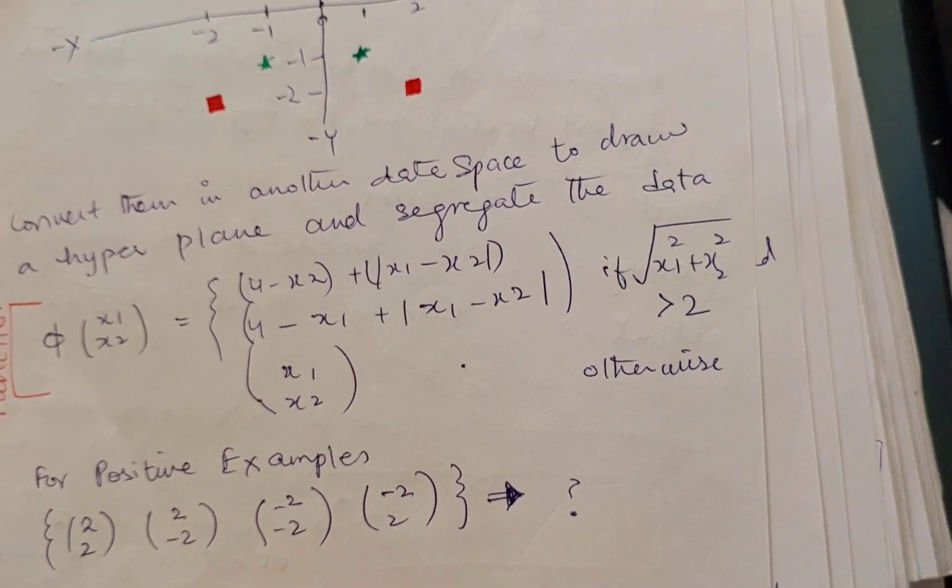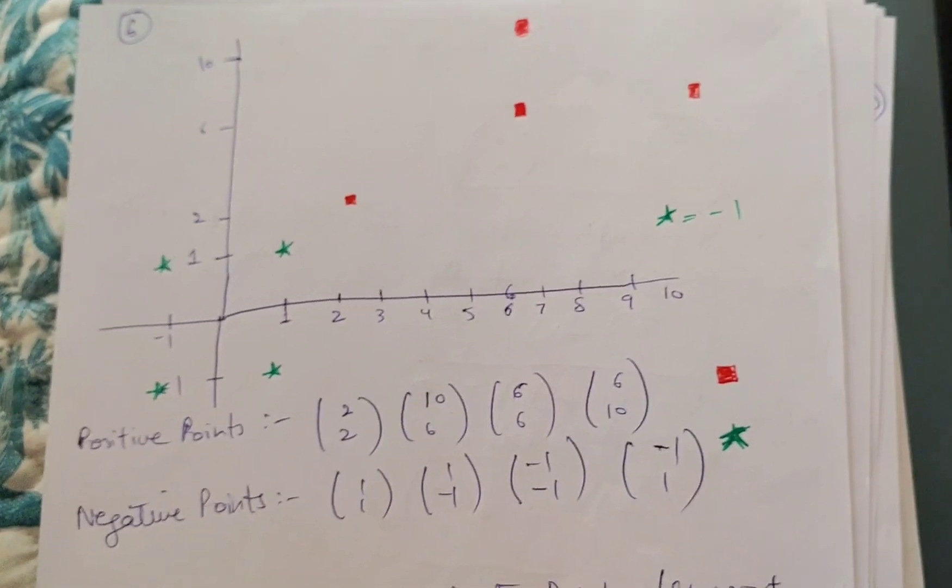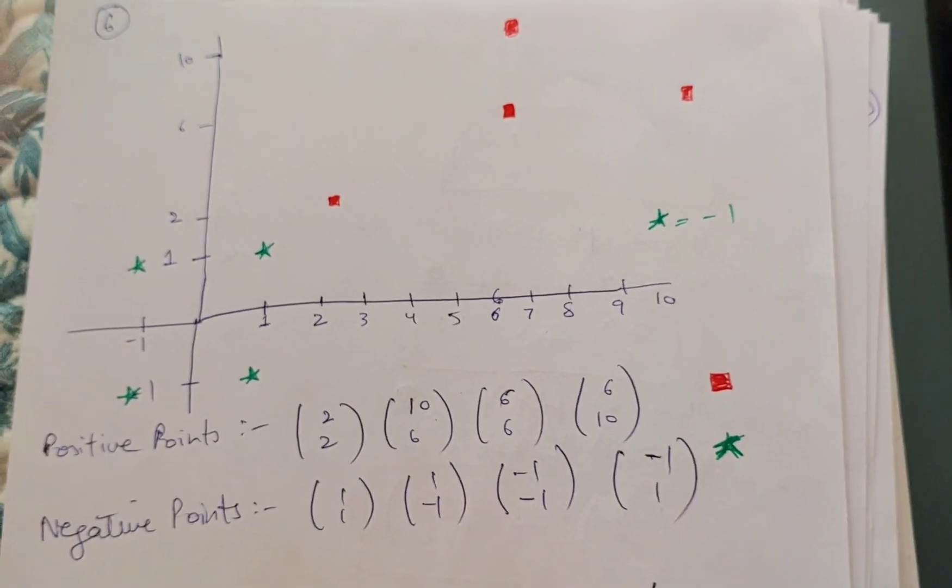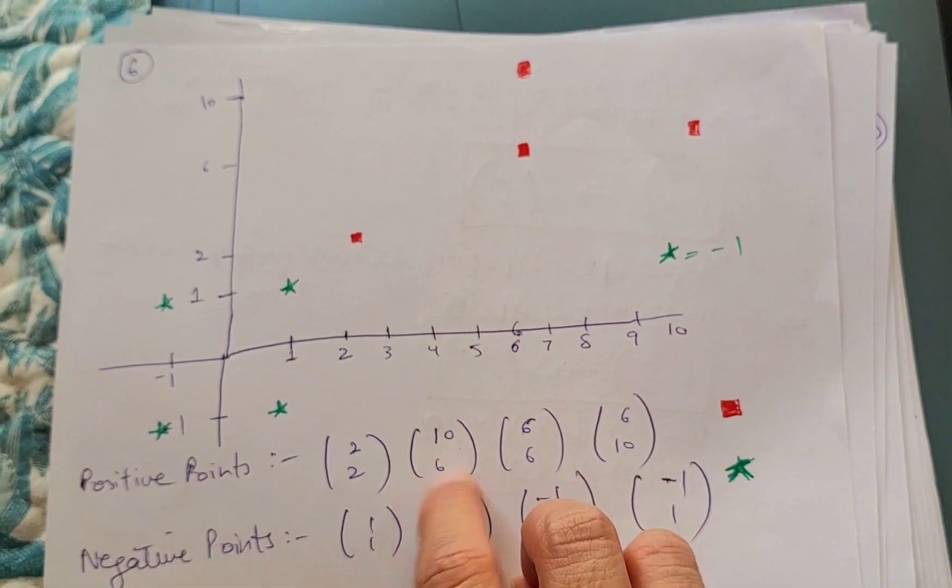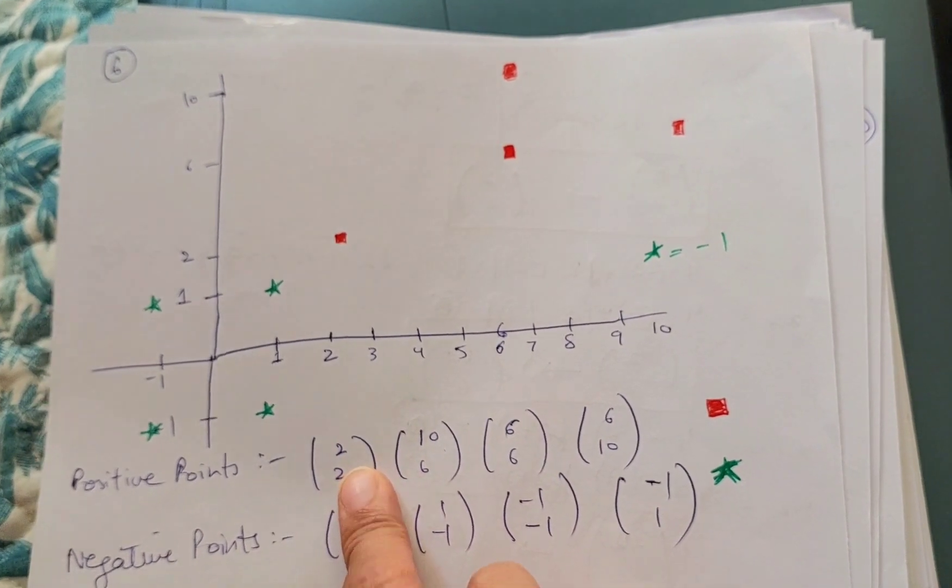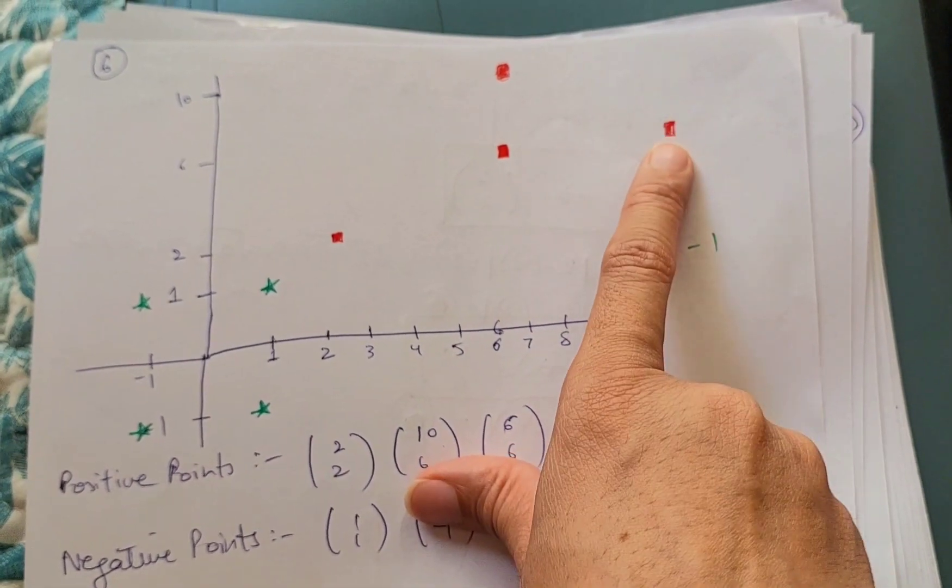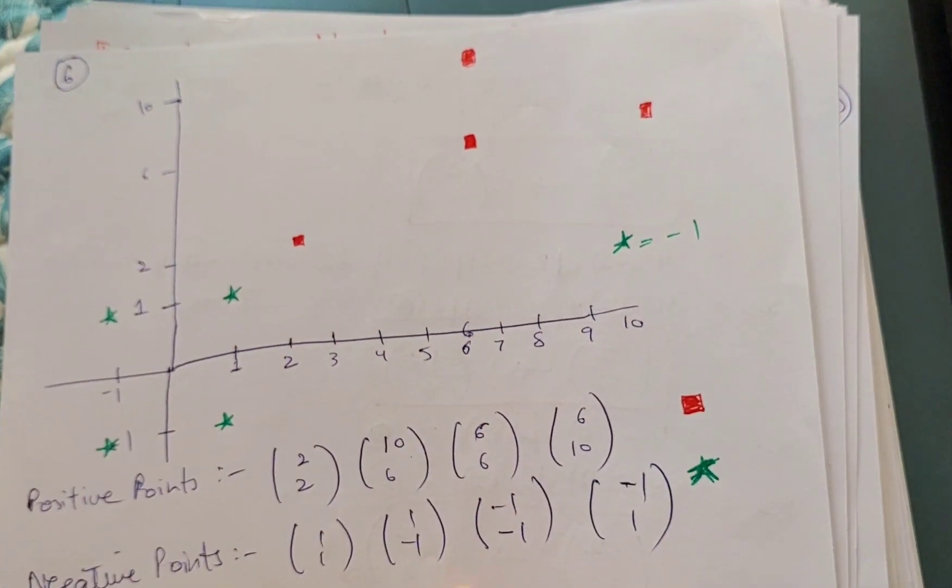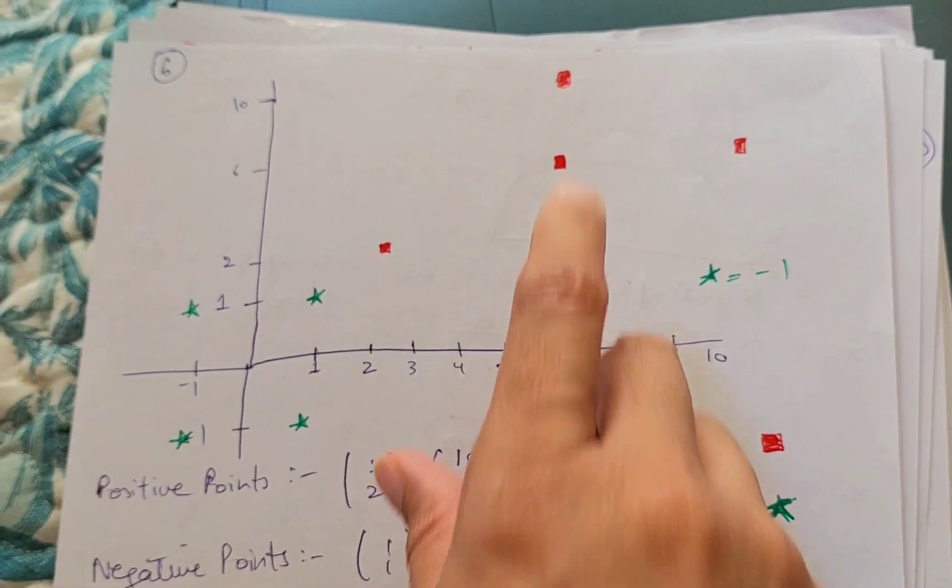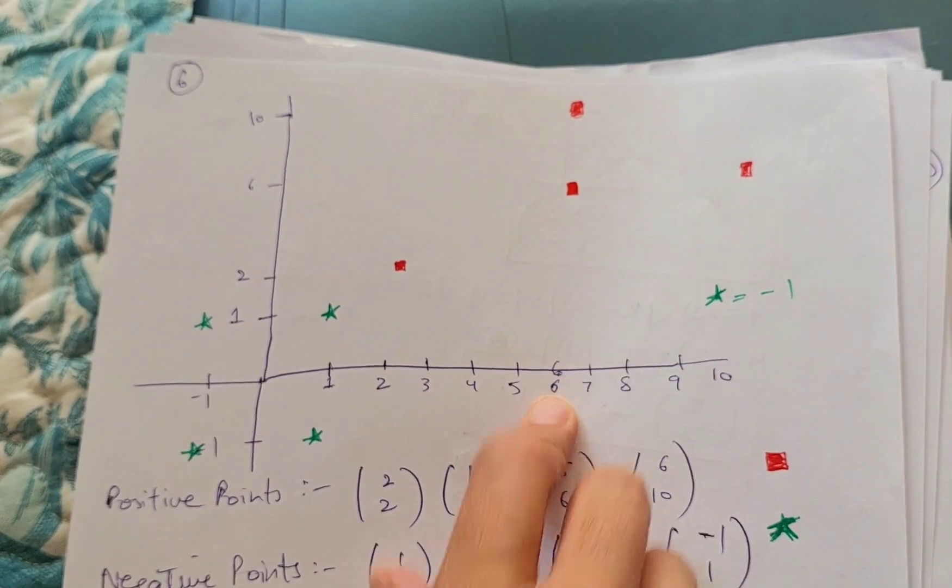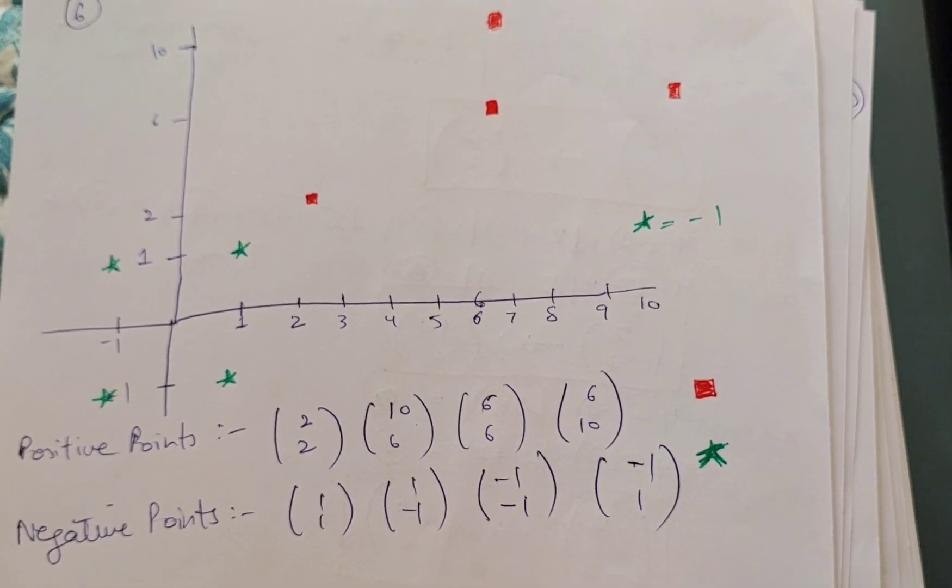So on the basis of this transformation, when I'm going to do a new plotting for the data, the new plotting will be something like this: the positive points, which are indicated with this red square, will move on to new points because now they are 2, 2. This point is representing (2, 2); (10, 6), this point is representing (10, 6); and (6, 6), this point is representing (6, 6).